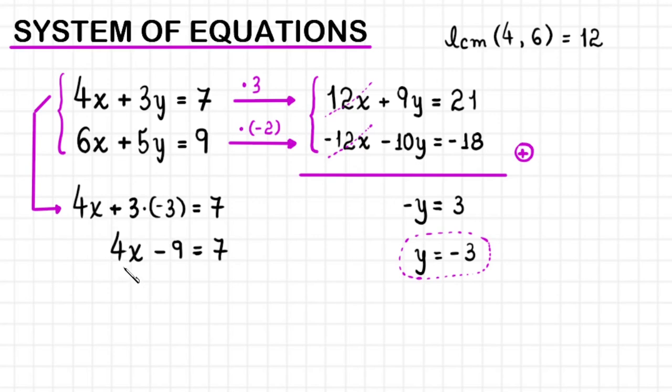If we add 9 to both sides, this negative 9 disappears, and we're left with 4x equals 7 plus 9, which equals 16. Dividing both sides by 4, x equals 4.